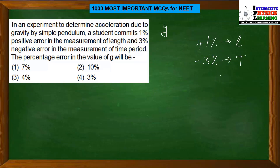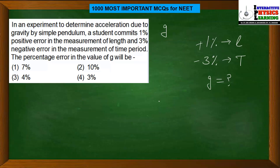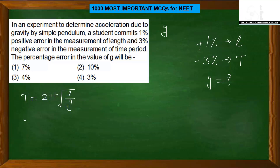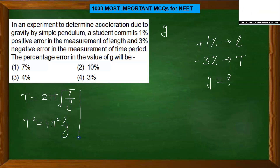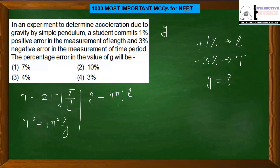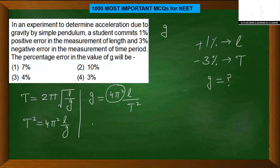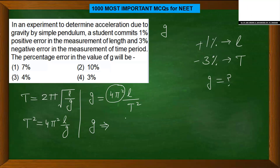We note the data: 1% positive error in L, 3% negative error in T. The formula for a simple pendulum gives T² = 4π²(L/g), so rearranging gives g = 4π²L/T². Here 4π² is a constant and can be ignored. For the percentage error in g, we take the modulus of all errors — whether in numerator or denominator, all are taken as positive.